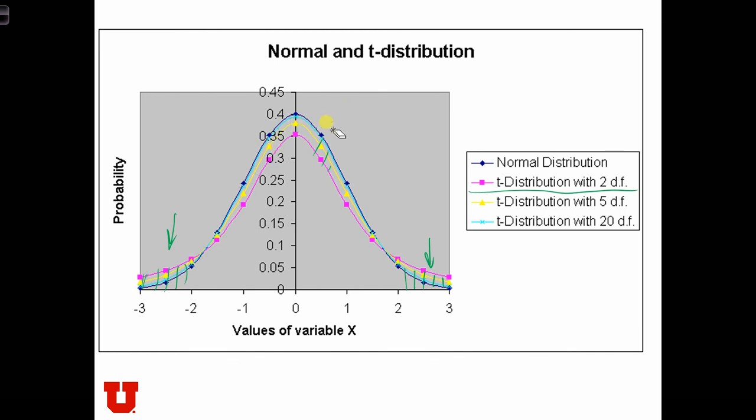But look at what happens when we increase the degrees of freedom parameter. So pink is the curve where degrees of freedom is equal to 2. But as we increase degrees of freedom from 5 to 20 and higher, we see that the t-distribution gets closer and closer to a normal distribution.